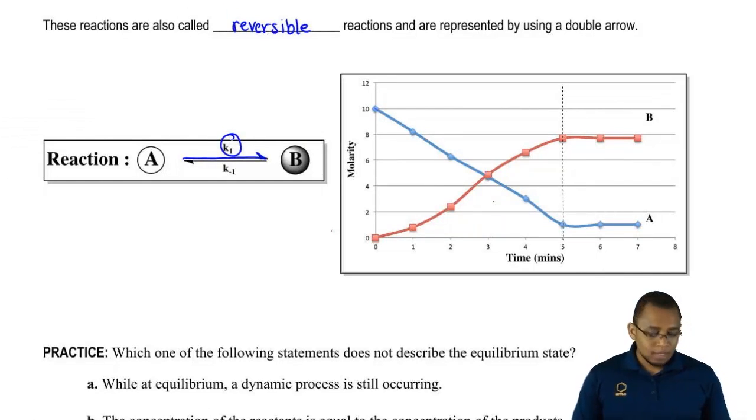Now in the same way, the reaction could go in the opposite direction where some of our product actually breaks down itself in order to rebuild some of the reactant that was lost. When we're going in the reverse direction, we use K minus 1. The minus signifies that we're going in the reverse direction.